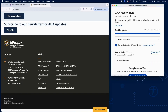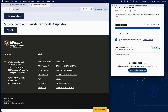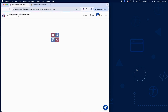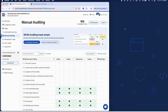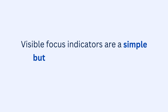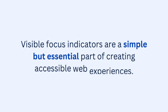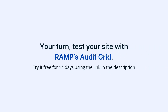And that wraps up testing for Success Criterion 2.4.7 using RAMP's Audit Grid and Chrome extension. Visible focus indicators are a simple but essential part of creating accessible web experiences. Now it's your turn — test your site with RAMP's Audit Grid. Try it free for 14 days using the link in the description.